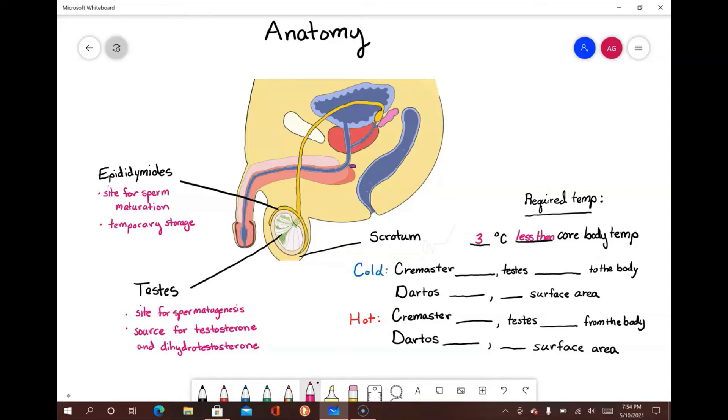When the environment becomes too cold, the cremaster muscle contracts, pulling the testes closer to the body in order to absorb heat from the body core. The dartos muscle contracts as well to shrink the scrotum in order to provide a lower surface area for heat loss.